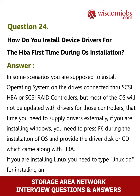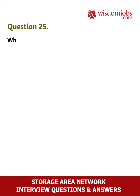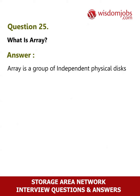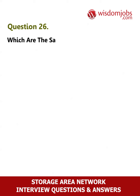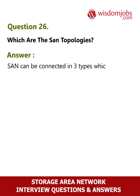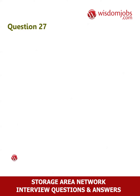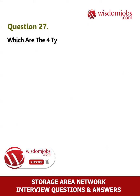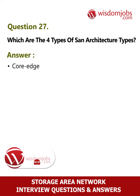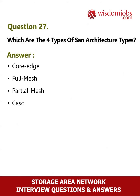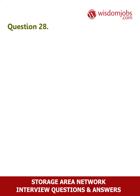Question 25: What is an array? Answer: An array is a group of independent physical disks used to configure volumes or RAID volumes. Question 26: Which are the SAN topologies? Answer: SAN can be connected in three types — Point-to-Point topology, FC Arbitrated Loop, and FC Fiber Channel Switched Fabric. Question 27: Which are the four types of SAN architecture? Answer: Core, Full Mesh, Partial Mesh, and Cascade.